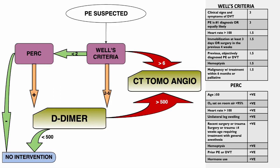This is the algorithm we used and provided. If a PE was suspected, the Wells score, shown to the right, was applied. A score greater than 6 proceeds directly to CT angiogram. A score less than 2 proceeds to the PERC score, and a score between 2 and 6 goes to D-dimer testing. A D-dimer greater than 500 proceeds to CT; less than 500 requires no intervention. For a Wells score less than 2, if the PERC score is negative, no intervention is required; if positive, a D-dimer test would follow.